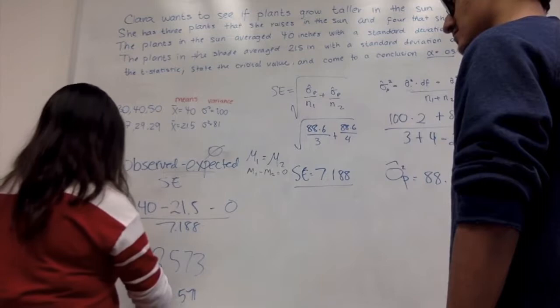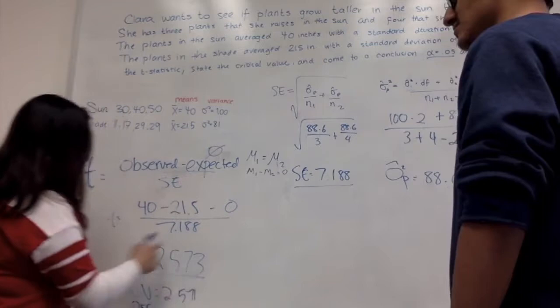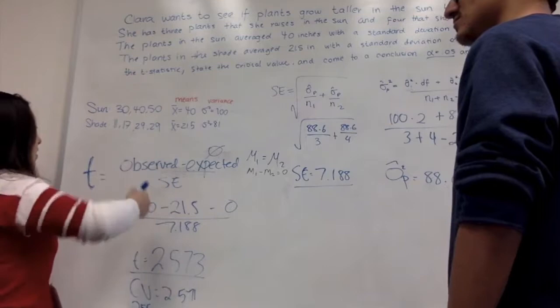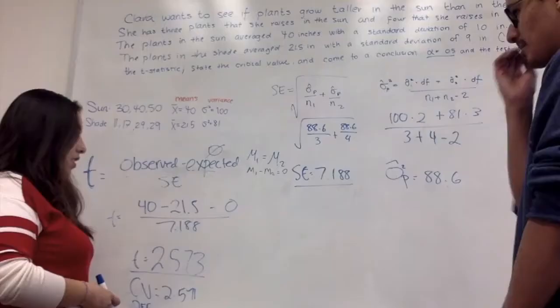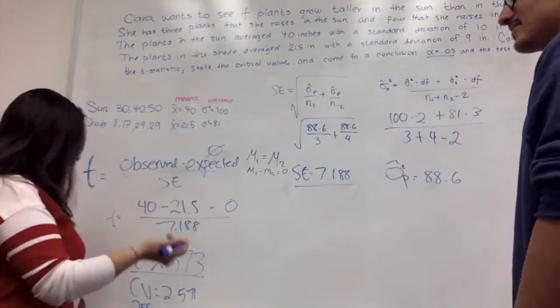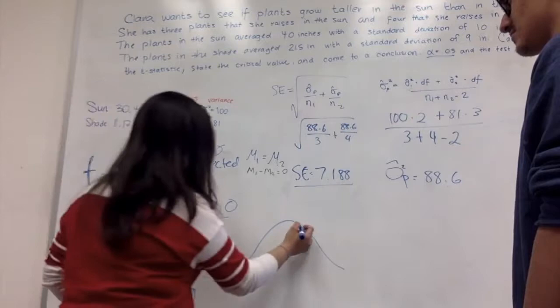We need to define it. So, as you can see, our t-value is bigger than our cv. So that means we're able to reject the null. Therefore, there is a difference between putting plants in the sun and in the shade. So that you're able to visualize this better, we're going to have our normal graph. And then our cv, which is, for example, let's say here, 2.571. And then our t is past this by literally 0.003, which is like right here, or a little bit closer. So, since it's in this area, that means we're able to reject the null.